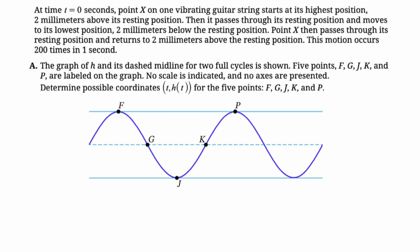So we got to find five points. The first one they tell you is that t equals zero, you are at your highest position, two millimeters above resting. So I'm going to say that this is zero two. Now we got to think about how long does it take to complete a period of this thing. So if the motion occurs 200 times in one second, so 200 times per second, that means you go one over 200 is your period. So the period of this thing is one over 200. So that's a very short period.